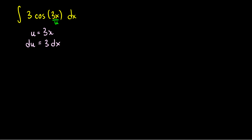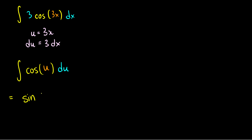I'll draw these in with colors so we can see the different parts. The 3 dx is our du, and 3x is our u. So making the substitution, cosine(3x) becomes cosine(u), and the 3 dx becomes du. Now we have a much easier integral: the integral of cos(u) du. The antiderivative of cos(u) is just sin(u) plus C. But what is u? We substitute back in: u = 3x, so this equals sin(3x) plus C.